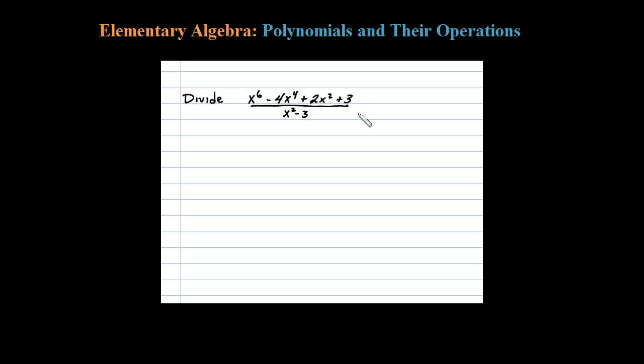Here we need to divide these polynomials using polynomial long division. We're missing the X to the fifth term and X to the third term, but I don't think it's going to matter in this one. Let's just do the long division and see what happens.